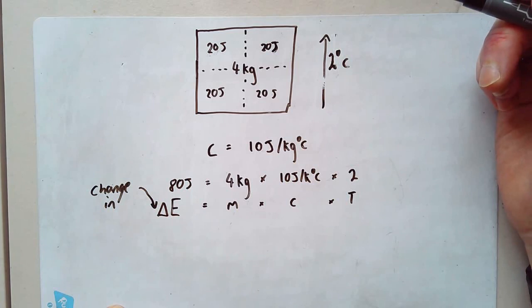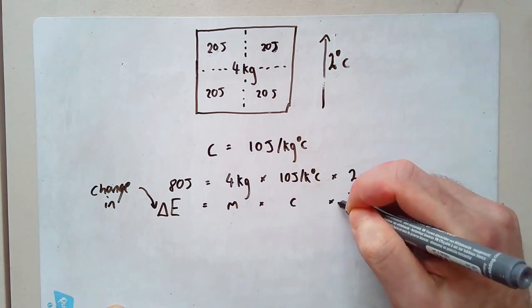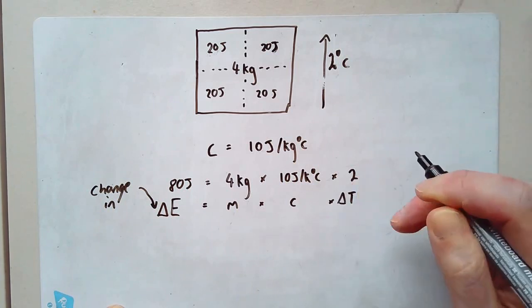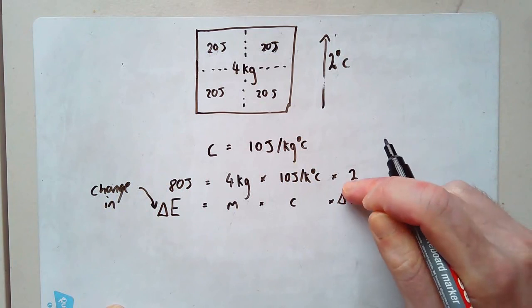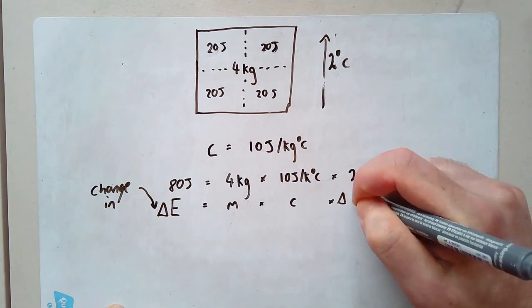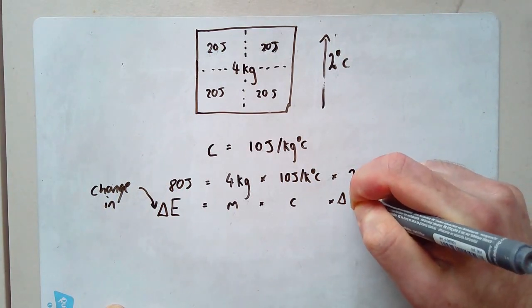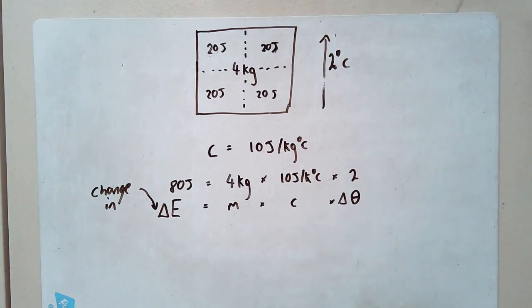And just to make things even more complicated, physicists use a special symbol here, called theta, which looks like a kind of oval, like a zero with a horizontal line going through it down the middle. Why do they use that theta? Doesn't really matter. The point is they do. And this is the equation that you need to learn.